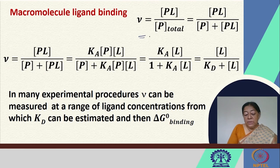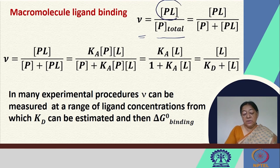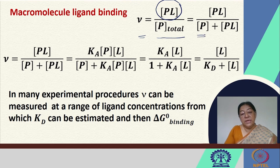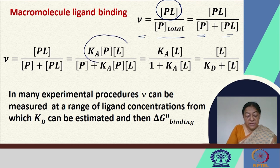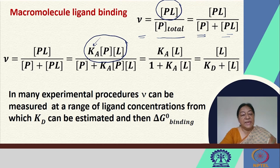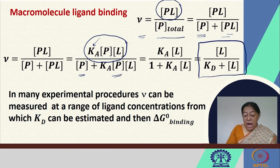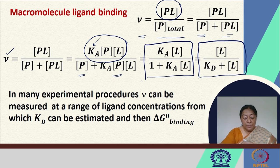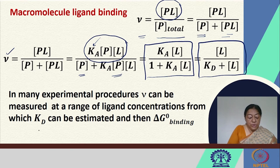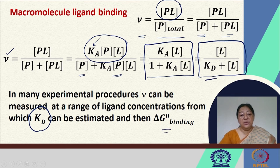We are looking at nu equal to the protein-ligand complex concentration divided by P-total, which includes unbound and bound protein. Using the definition of Ka, we can express nu in terms of just the free ligand concentration. In many experimental procedures, nu can be measured at a range of ligand concentrations, from which we can determine the dissociation constant KD and then the free energy of binding.